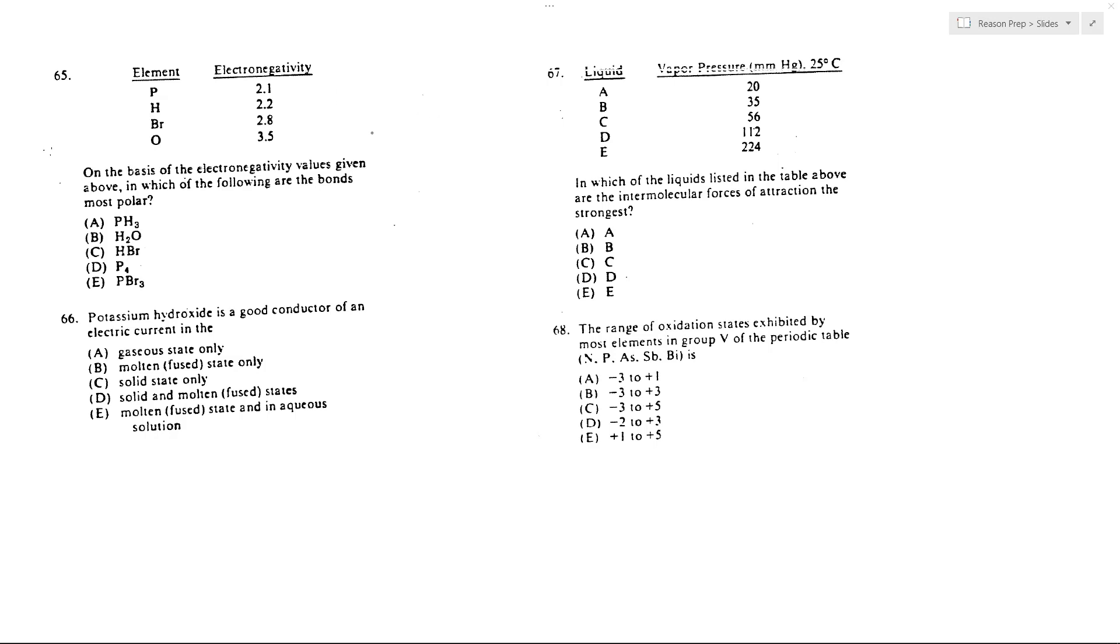65 on the basis of these electronegativity values, which have the most polar bonds. The most polar bonds are going to be the ones where there's the greatest difference in electronegativity. So let's just calculate for the PH bond and the HO bond what the electronegativity differences are, and whichever one has the highest will be the highest polarity or the most polar.